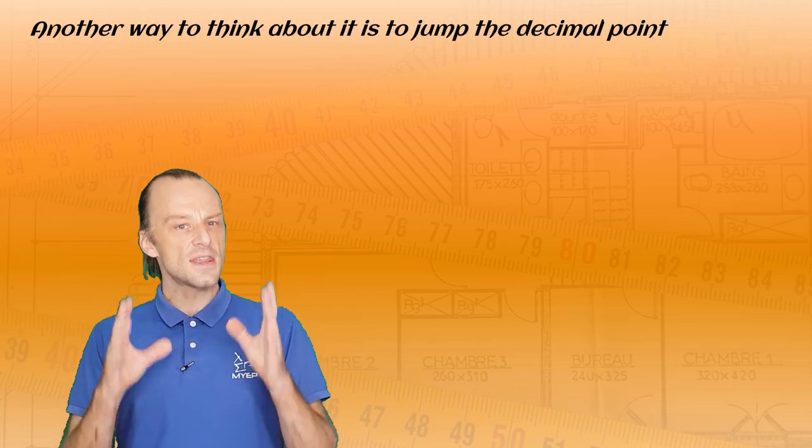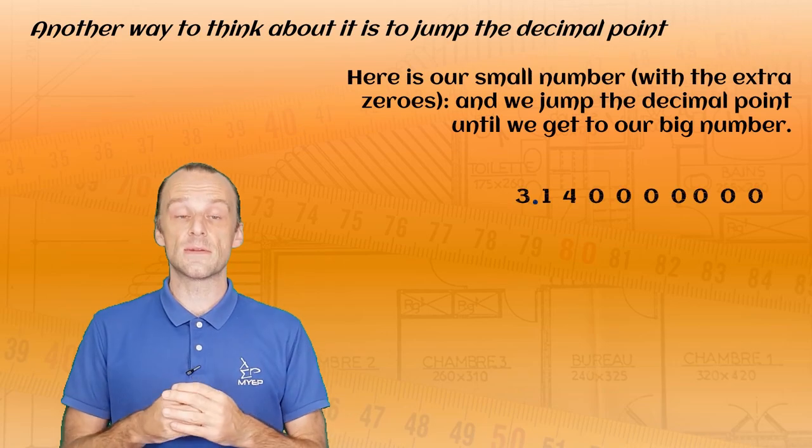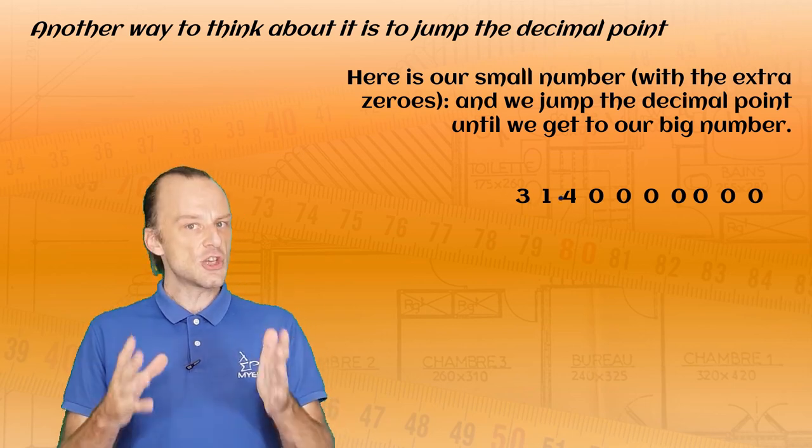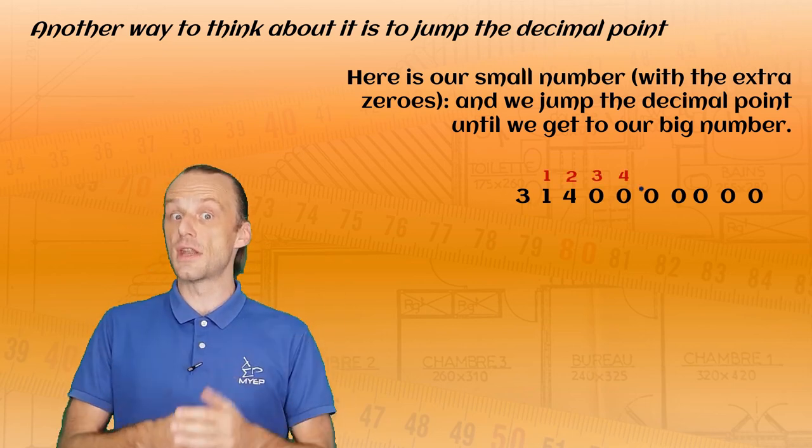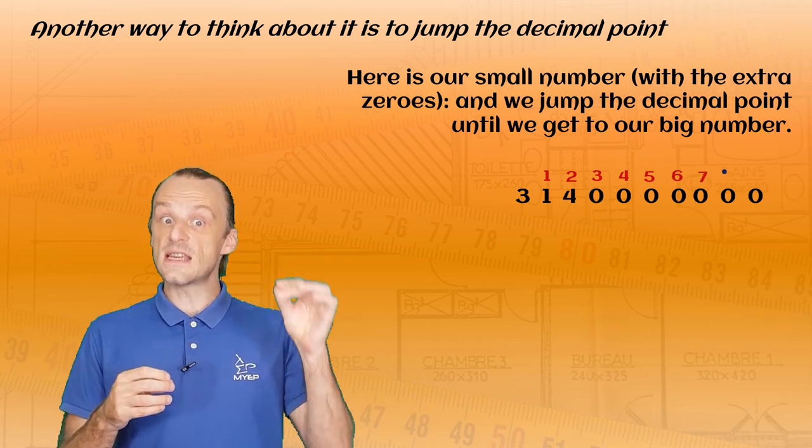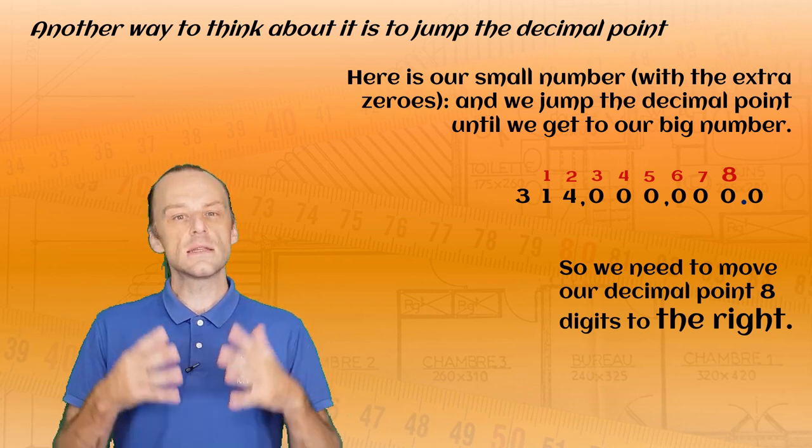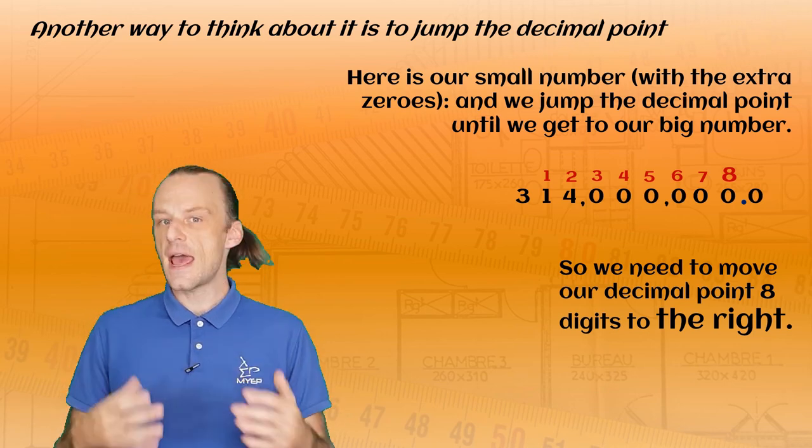Another way to think about this is jumping the decimal point. Here is the number 3.14 again. To change this into our original number, we need to jump the decimal point eight places to the right, which again is like multiplying by 10 eight times.